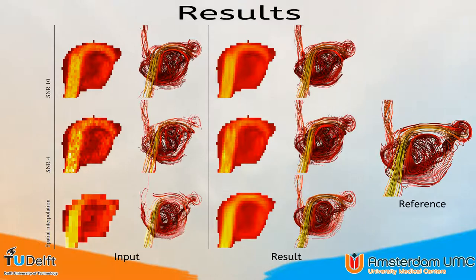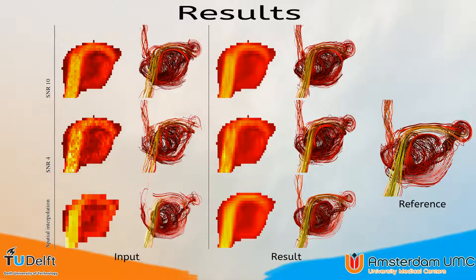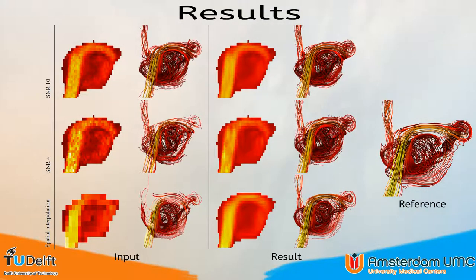To evaluate the robustness of our method, we introduce various amounts of noise to the data. On the left side, the input is shown, and on the right side, the result of our method and the reference. The top row shows a typical signal-to-noise ratio for PC-MRI of 10, meaning 10% of the data is considered to be noise. In the middle row, it can be seen that even with 25% of the input data being noise, the result is really close to the reference. The bottom row shows the result of spatial interpolation, where 7/8 of the data was removed, yet after interpolation the data is close to the reference — meaning with just 1/8 of the data, the method was able to reproduce the reference with high accuracy.